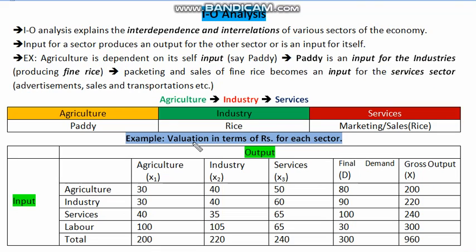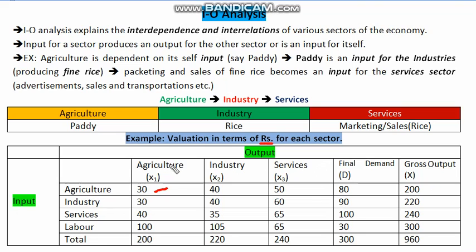The whole flow of output from the agriculture sector becomes an input for the industrial sector, and the output of the industrial sector becomes an input for the services sector. We make valuations according to the amount of outputs produced as they flow from one sector to the other, taken here in terms of rupees. This is the input side and this is the output side. We are taking three sectors: agriculture, industrial, and services. The value 30 represents the output produced from the agriculture sector.